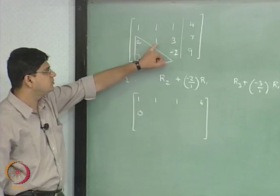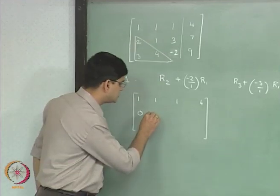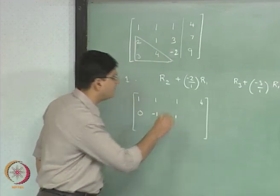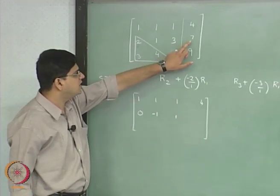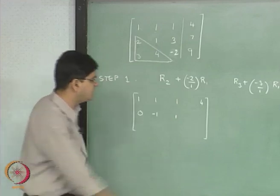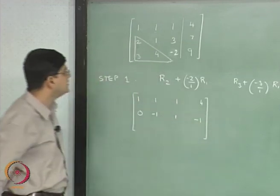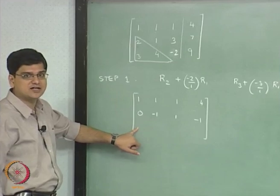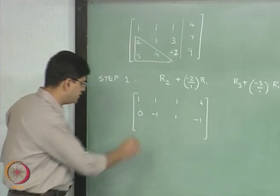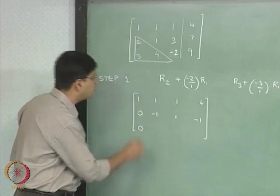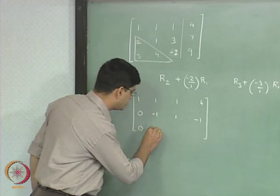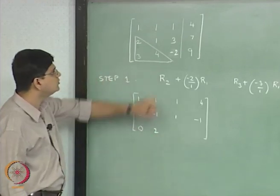Now, this first term is going to be 3 minus 2 which is going to be 1, and this is going to be 7 minus 8 which is minus 1. This term again we know for a fact that this is going to be 0, we do not do this extra computation, we will just put 0 over here.